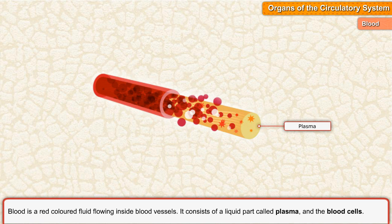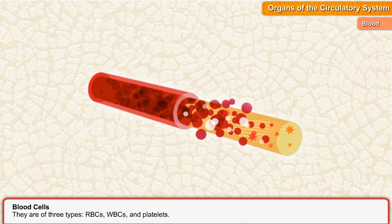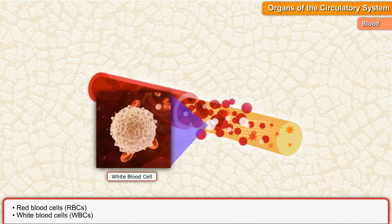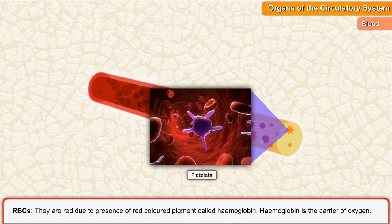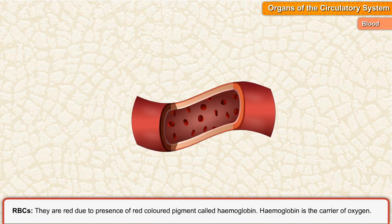Blood is a red-colored fluid flowing inside blood vessels. It consists of a liquid part called plasma and blood cells. Plasma is the fluid part of the blood that carries nutrients and waste products. Blood cells are of three types: red blood cells (RBCs), white blood cells (WBCs), and platelets.